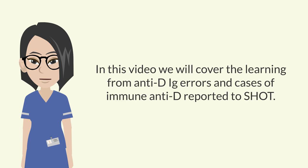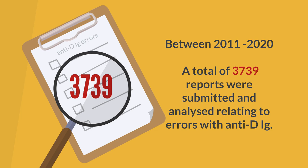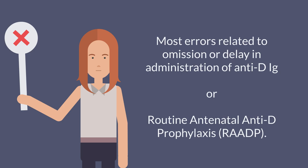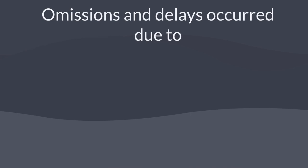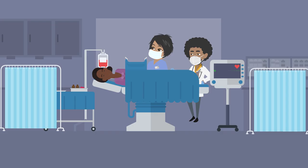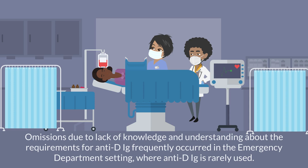Between 2011 and 2020, over 3,000 reports were submitted and analyzed relating to errors with anti-D Ig. Most errors related to omission or delay in administration of anti-D Ig or RAADP. Omissions and delays occurred due to failures in communication, early discharge of patients, and lack of understanding regarding the requirement for anti-D Ig and assumptions in care. Omissions due to lack of knowledge frequently occurred in the emergency department setting, where anti-D Ig is rarely used.